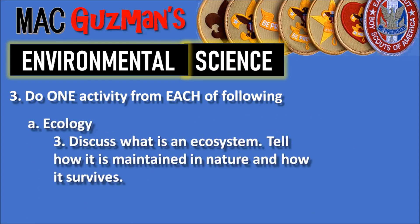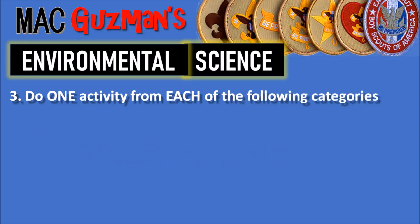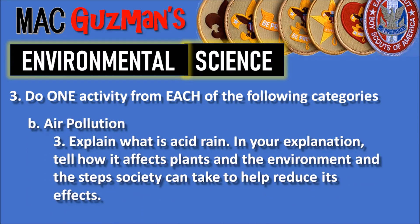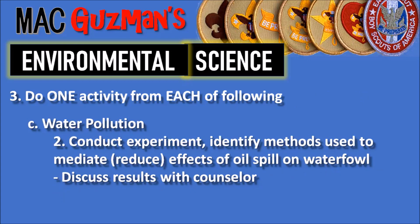For Ecology, I chose the third option, which says to discuss what an ecosystem is and tell how it is maintained in nature and how it survives. For Air Pollution, I also chose the third choice, which says to explain what acid rain is — how it affects plants and the environment, and the steps society can take to help reduce its effects.